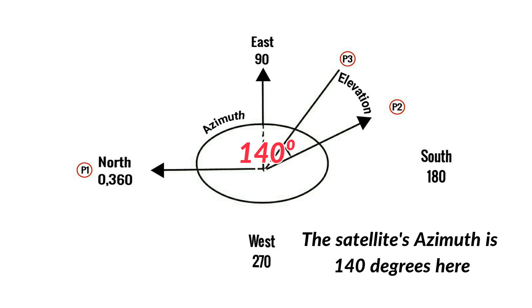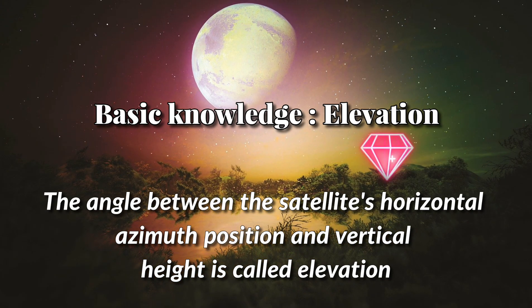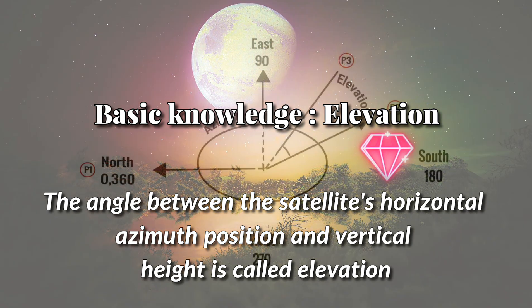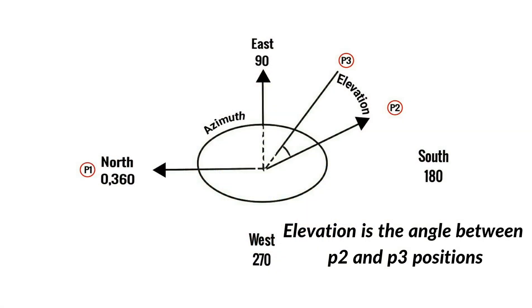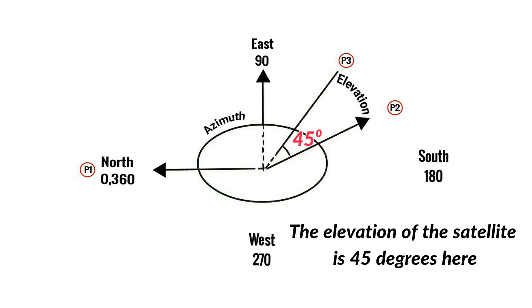The satellite's azimuth is 140 degrees in this example. Basic knowledge — Elevation: The angle between the satellite's horizontal azimuth position and its vertical height is called elevation. Elevation is the angle between positions P2 and P3.